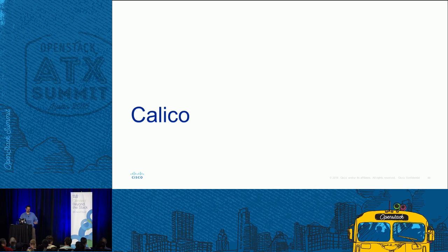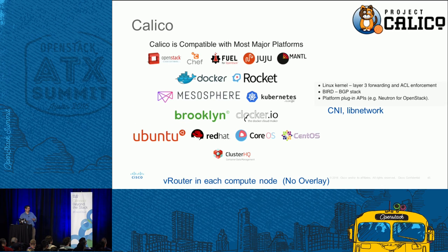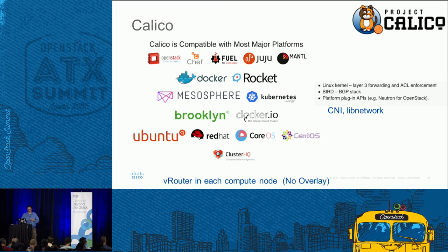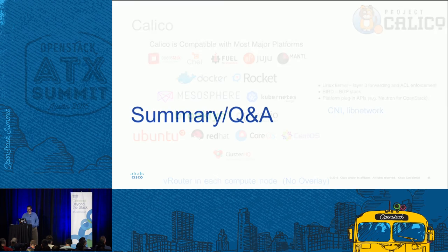The last topic is Calico. Calico was one of the first projects to support overlay networking for containers. It supports most major platforms and operates in a virtual router mode. It connects with libnetwork and CNI, so it works well from an OpenStack model standpoint with Neutron. We plan to continue supporting Calico as well as other container networking standards because, as mentioned with OCI and CNCF, our goal is to be open and connect with multiple different projects — not lock you into one Cisco way of doing things.